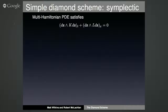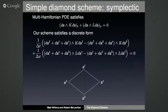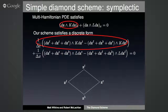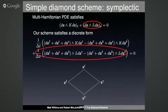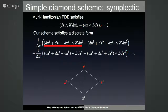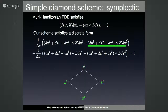The scheme is second order. Now for the multi-symplectic part: the multi-Hamiltonian satisfies the conservation law, and our scheme satisfies a discrete version of it. Looking at it piece by piece: the time derivative is replaced by a difference involving the top three nodes minus the bottom three, and the space derivative by three nodes on the right minus three on the left. That is our discrete multi-symplectic conservation law.